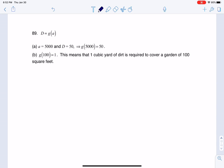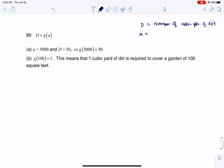So let's just take some notes here. We're talking about D, right? This is the number of cubic yards of dirt, and A over here, that was the square feet of this garden, right? Square footage of garden.